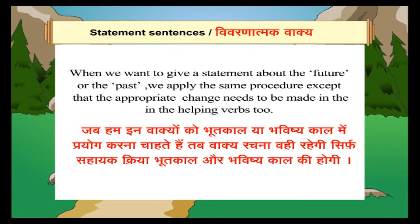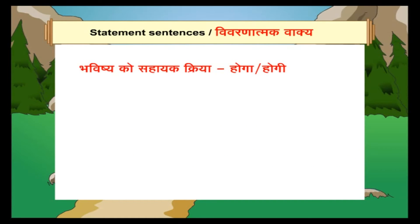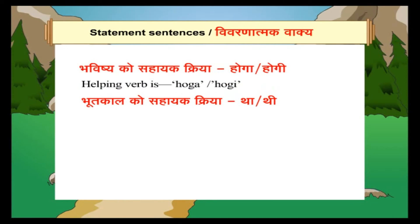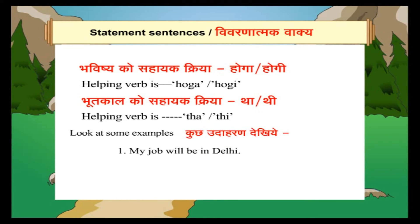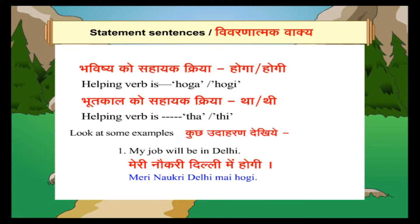When we want to use these sentences in the past tense or future tense, the sentence structure remains the same — only the helping verb changes. For future tense, the helping verb will be 'होगा' or 'होगी'. For past tense, the helping verb will be 'था' or 'थी'. Look at some examples. My job will be in Delhi. (मेरी नौकरी दिल्ली में होगी.)